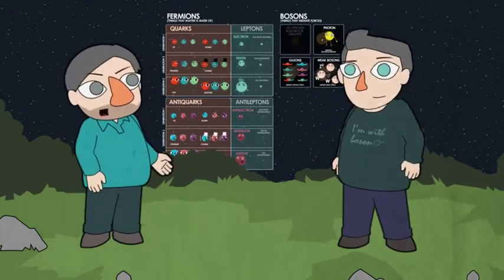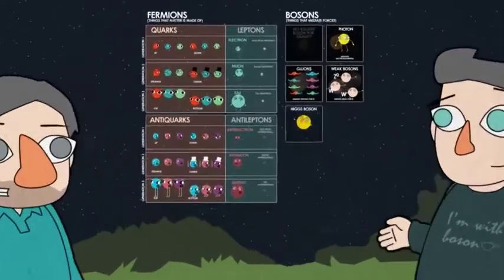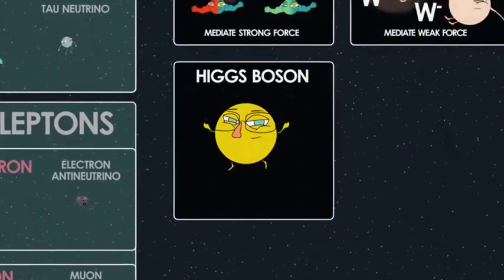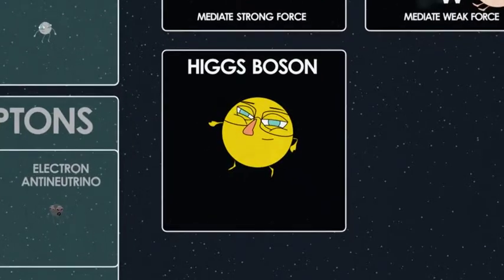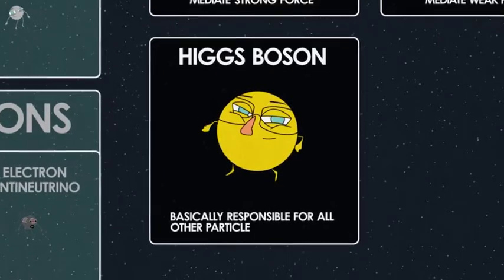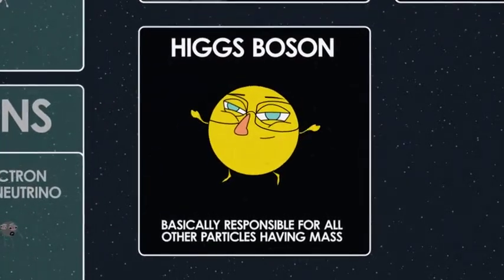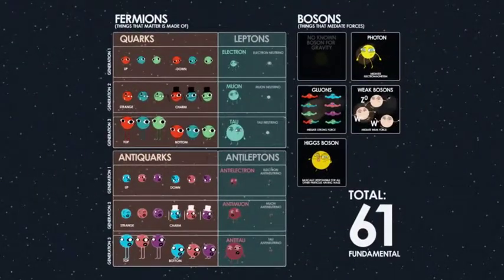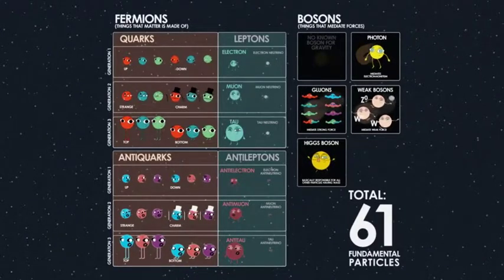We're at 60 — a nice round number — but we're still not done. There's one more: the Higgs boson. The Higgs boson was the last one to be discovered. It is its own antipartner, thankfully, so there's just the one. It's basically responsible for all the other particles having mass. So our total is 61 fundamental particles — which is completely untidy.